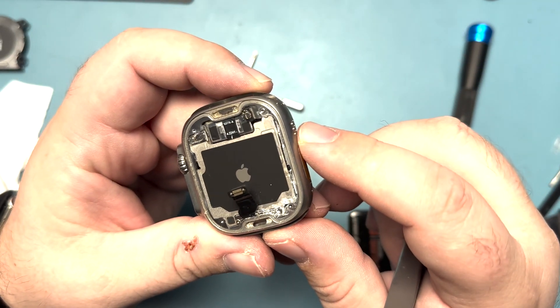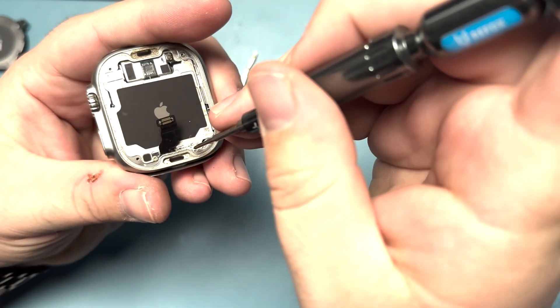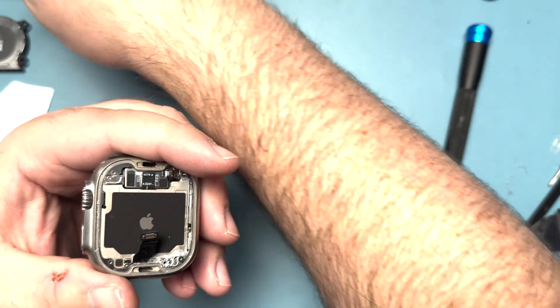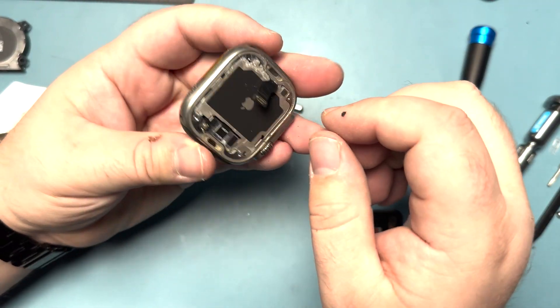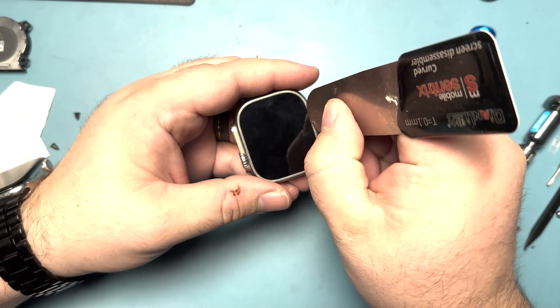For now, we're going to take off these little screws and brackets from this side. Entering from the front is quite tricky on these guys, but with enough practice, it's not horrible.